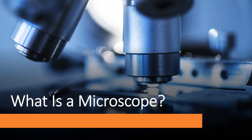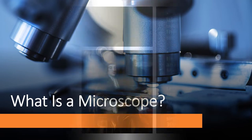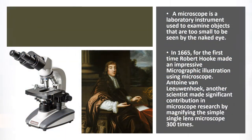What is a microscope? A microscope is a laboratory instrument used to examine objects that are too small to be seen by the naked eye. It is derived from ancient Greek words: 'mikros' meaning small, and 'skopein' meaning to look or see. It is one of the most revolutionized scientific instruments used to observe or examine minute structures not clearly visible to the naked eye.